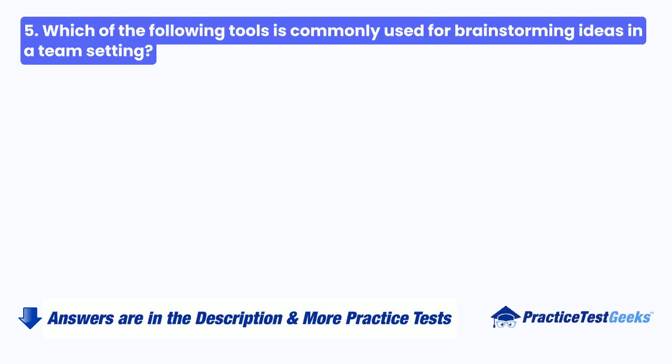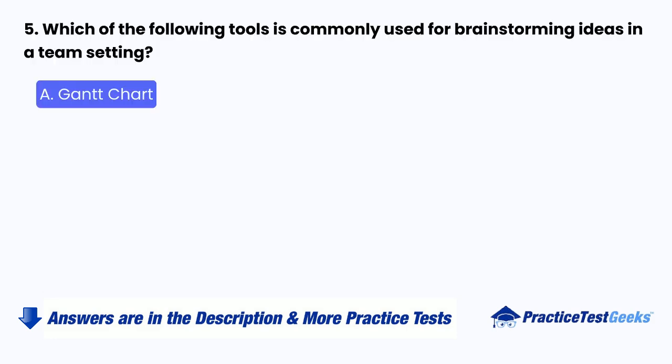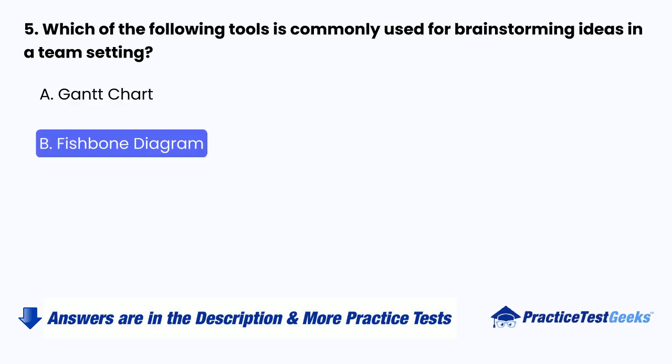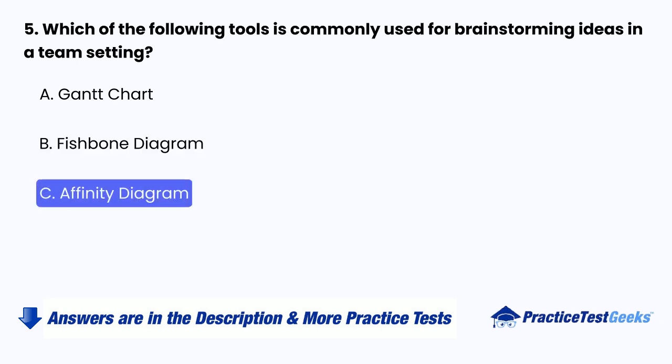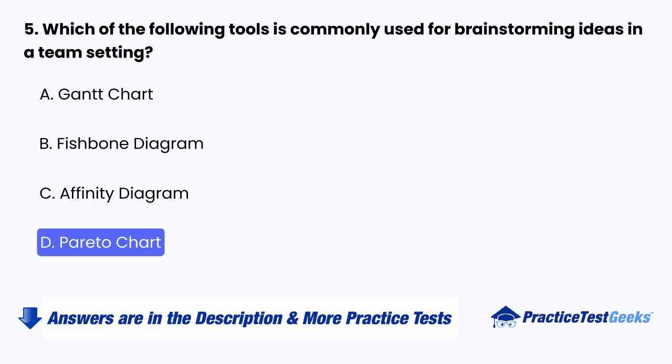Question 5: Which of the following tools is commonly used for brainstorming ideas in a team setting? A. Gantt chart. B. Fishbone diagram. C. Affinity diagram. D. Pareto chart.